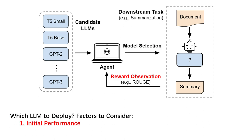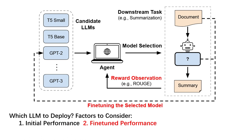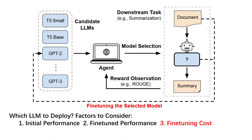There are several factors to be considered. The first is the initial model performance on this downstream task. Then, after each deployment, we will also collect some data with our selected model, and this data can be used to further fine-tune our model to improve its performance. Therefore, the fine-tuned model performance is another factor we would like to consider in our model selection process.